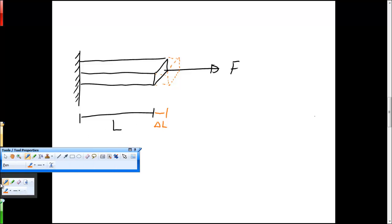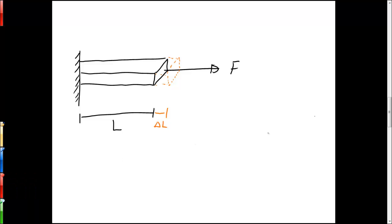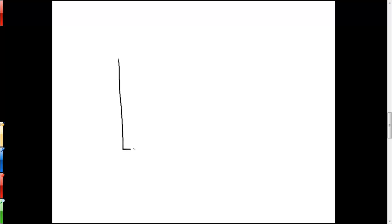Now it turns out that for most materials under light to moderate loads that the amount that the rod deforms by, or the amount that it lengthens by delta L, is proportional to the force that we apply to it. So if we were to draw a graph of this relationship, we put delta L on the x-axis and force on the y-axis for historical reasons. And we'd see that for low to moderate forces we end up with a linear relationship between the two.